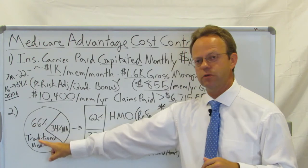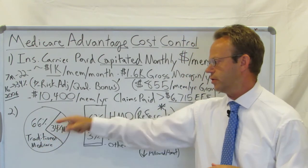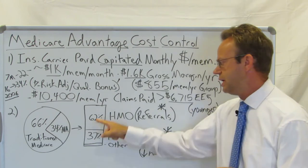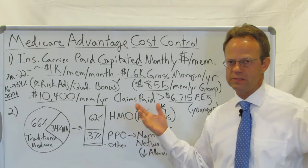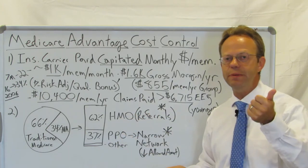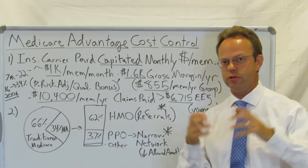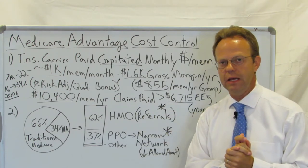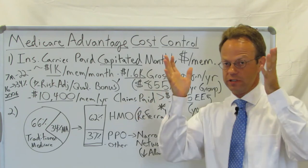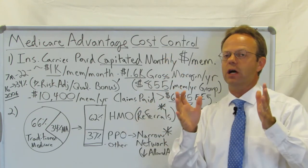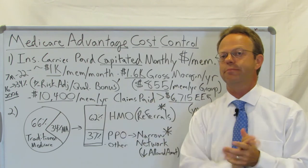This is a chart from Kaiser Family Foundation that I wanted to recreate here. Of the 34% on Medicare Advantage, 62% are in an HMO — where you have a PCP gatekeeper and require referrals in order to see specialists and have certain tests, procedures, or labs done. It's not like a PPO; there is control over what the patient can or cannot receive, dictated by the doctor.